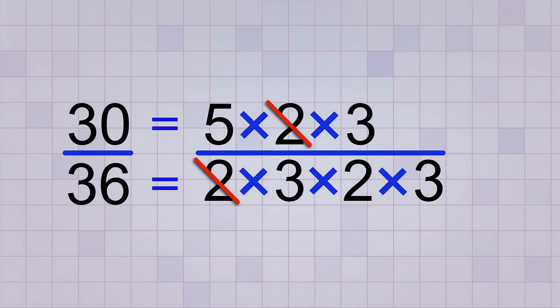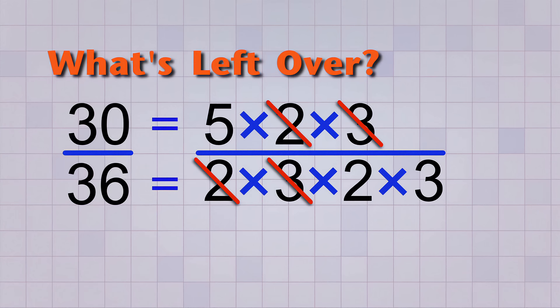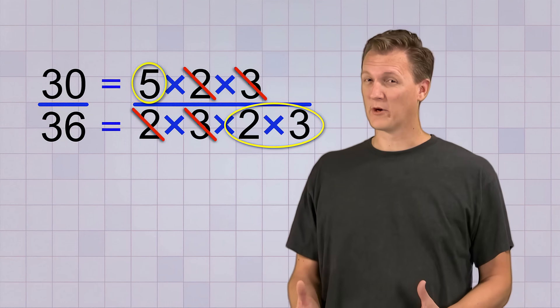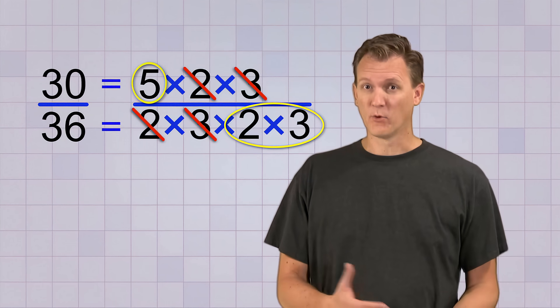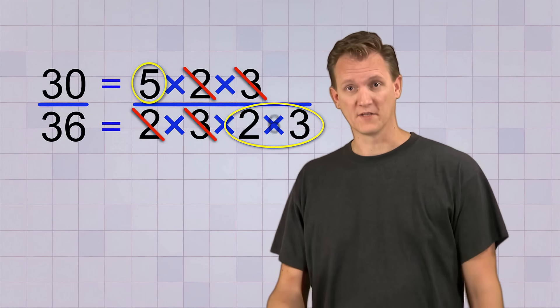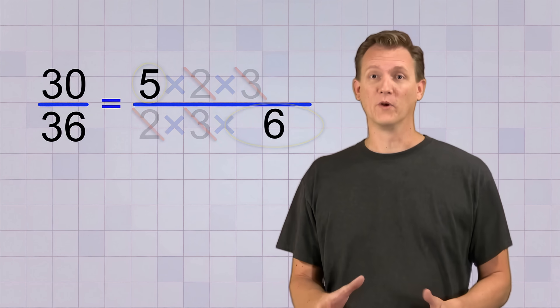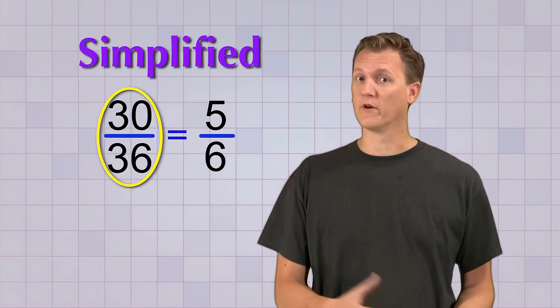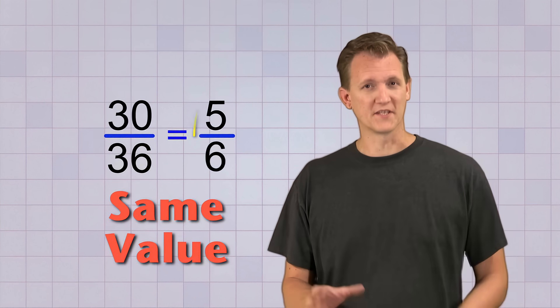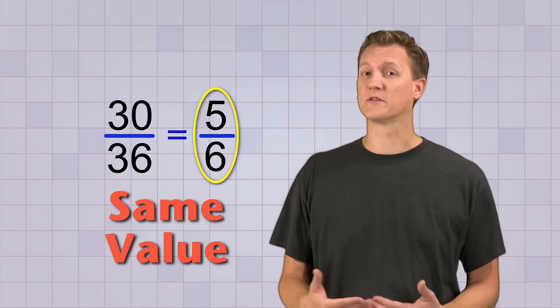Now we can see that there's another pair we can cancel. There's a 3 on both the top and bottom, so we can just cross those out. Okay, that's all the common factors we can cancel. So now all we have to do is see what's left over. We have a 5 on the top and a 2 times 3 on the bottom. We don't want to leave our problem looking like this, so we need to recombine any factors that didn't cancel. That means multiplying together our 2 and 3 on the bottom, which gives us 6. There! We're left with the fraction 5 over 6. That's the simplified form of the fraction 30 over 36. They both have the same value, but the simplified one is written using the smallest numbers possible.